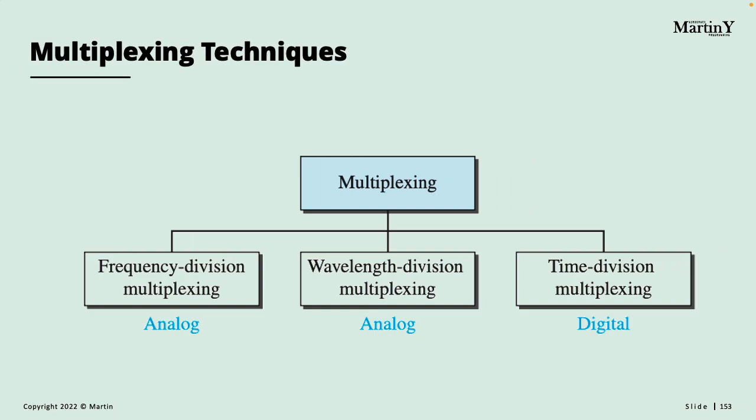Frequency division and wavelength division multiplexing are very common for analog signals — continuous signals — while time division multiplexing is more for digital signals. This doesn't mean those techniques are used exclusively for analog or digital, because you can convert analog to digital and digital to analog.